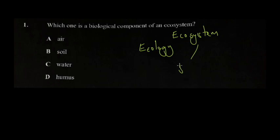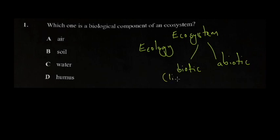So you have the biotic and the abiotic. Abiotic simply means non-biotic. Biotic simply means living — the living components are called biotic, and the non-living components are called abiotic.